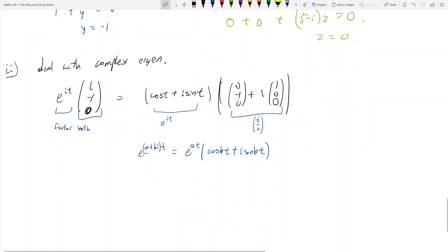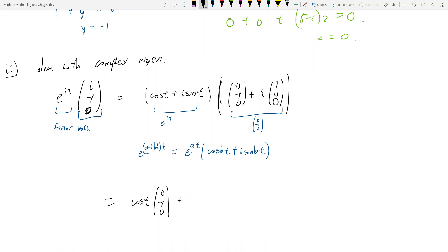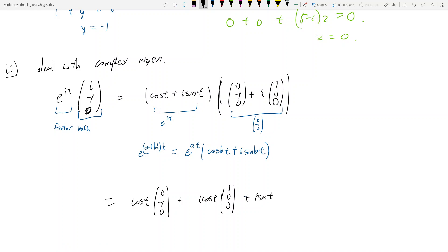And now you got to FOIL that. So that's equal to, so first is cosine t, 0, negative 1, 0, alright? And then plus outer, so this now becomes i cosine t, 1, 0, 0. Inner becomes plus i sine t, 0, negative 1, 0. And then last becomes minus sine t, 1, 0, 0, okay?